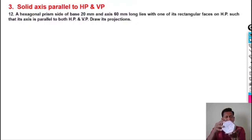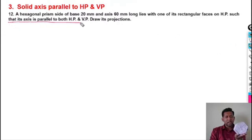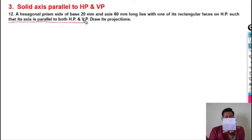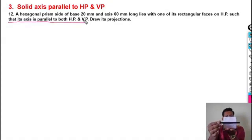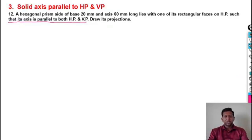The rectangular face is resting on the horizontal plane, which is perpendicular to VP and parallel to HP, and the axis is parallel to both HP and VP. When the solid axis is parallel to both HP and VP, you always have to start the figure with the side view first.